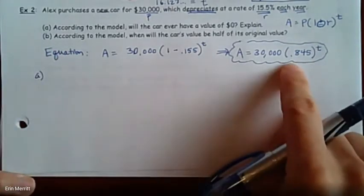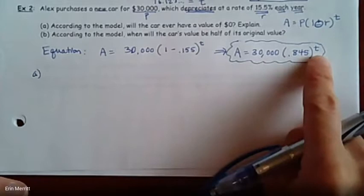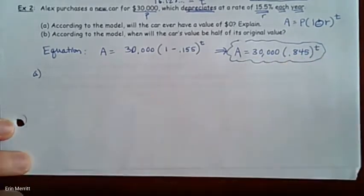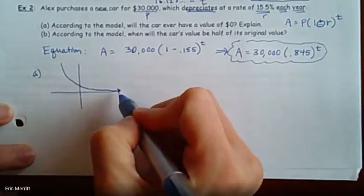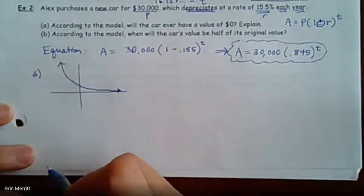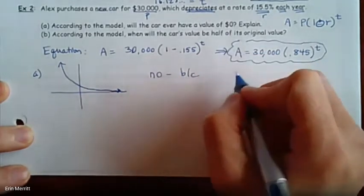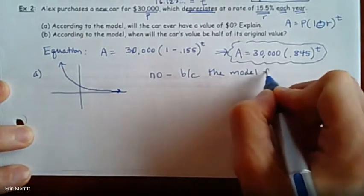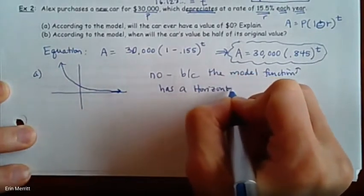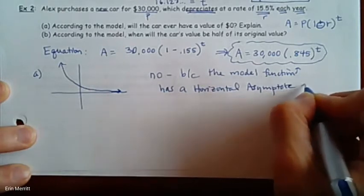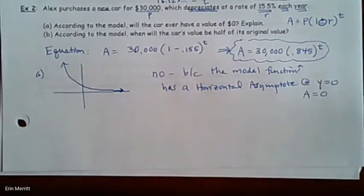Part A says, according to our model, will the car ever have a value of zero? You could technically keep plugging in bigger and bigger numbers of t. But if you remember what you know about a decreasing exponential function, it's going to look something like this. But does it ever technically hit zero? Nope, because there's something called a horizontal asymptote. So the answer here is no, because the model function has a horizontal asymptote at y equals zero, or in this case A equals zero.